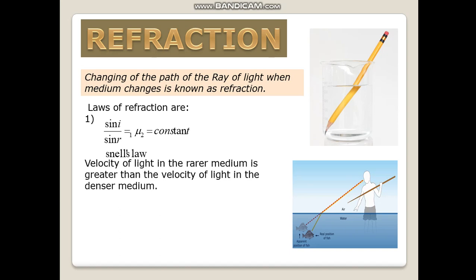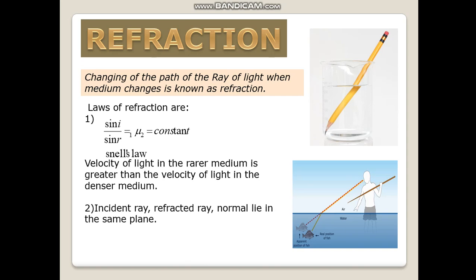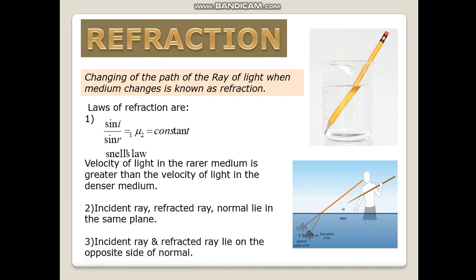Velocity of light in the rarer medium is greater than the velocity of light in the denser medium. The incident ray, refracted ray, and normal lie in the same plane. Incident ray and refracted ray lie on the opposite side of the normal.